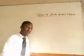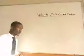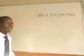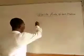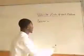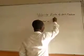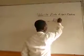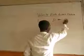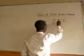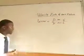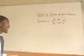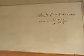The velocity ratio is different from one machine to another. For the lever, the velocity ratio is the distance moved by the effort over the distance moved by the load. Note that it does not have a unit. That is the formula for the lever.